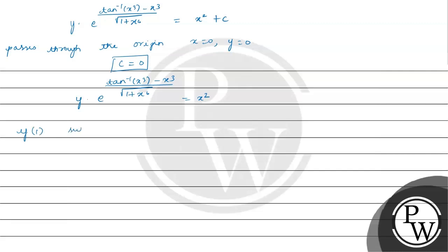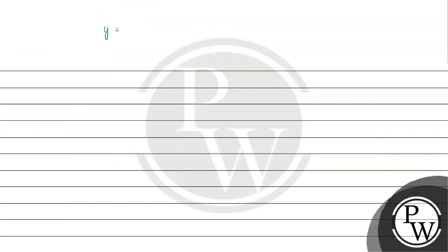Now we have to find y(1). Substitute x = 1. We get y · e^(tan⁻¹(1) − 1/√(1+1)) = 1. Since tan⁻¹(1) = π/4 and √2 is root of 1+1, we have y · e^(π/4 − 1/√2) = 1, which gives y · e^((π−4)/(4√2)) = 1. So y = 1 / e^((π−4)/(4√2)).